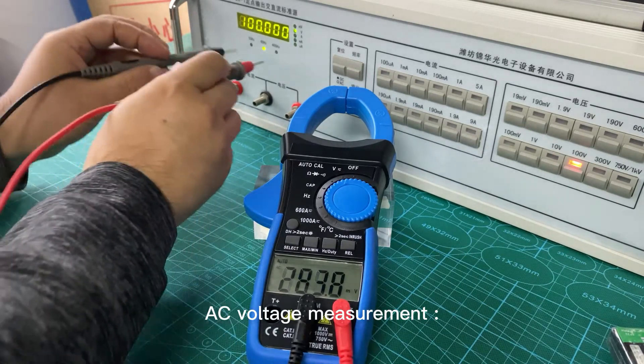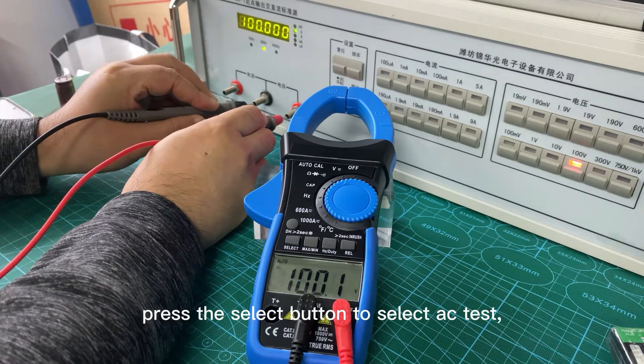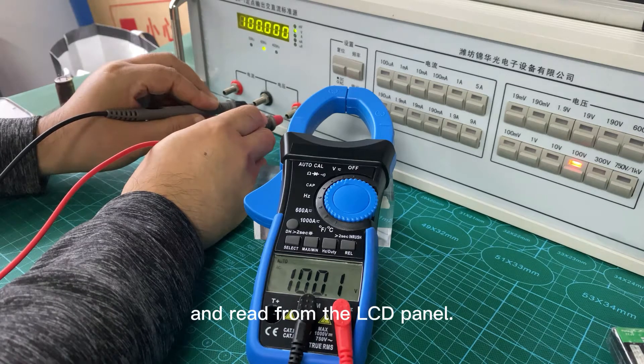AC voltage measurement: Set the rotary switch to the V position. Press the select button to select AC test and read from the LCD panel.